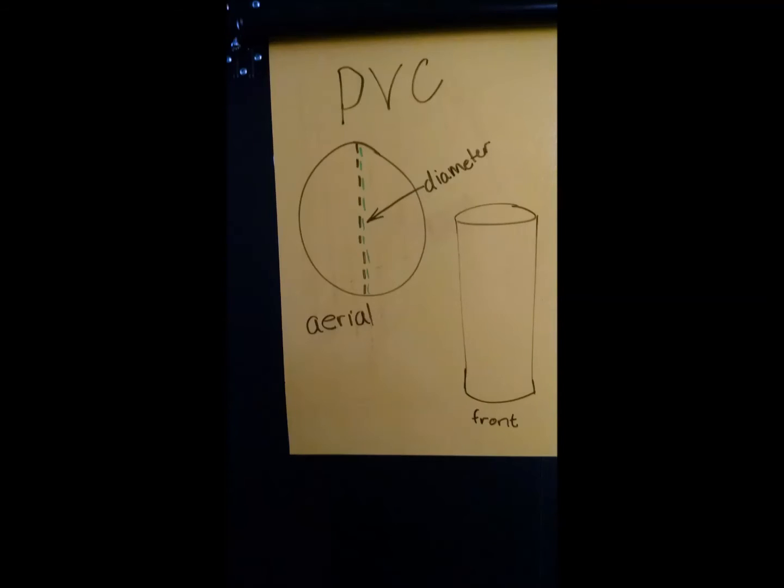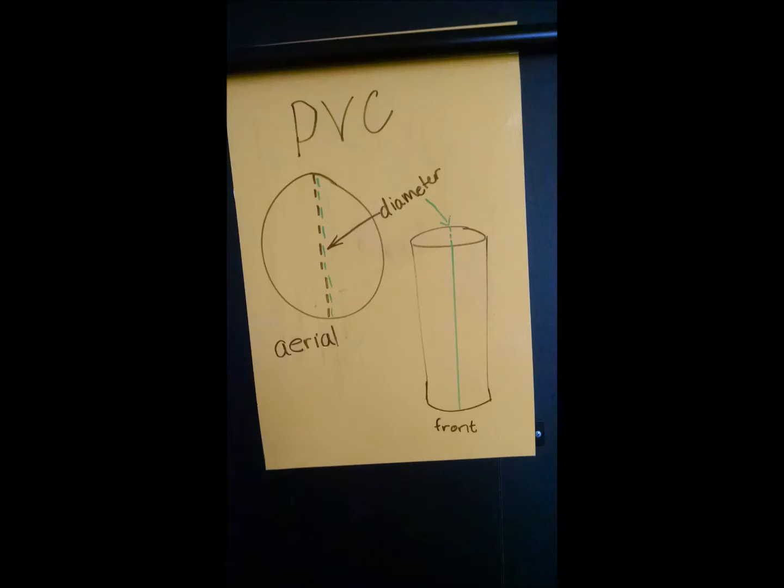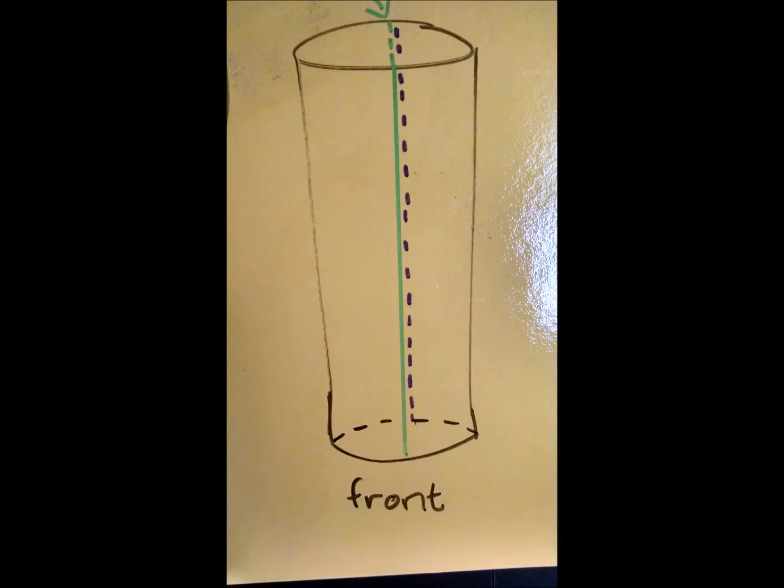So this is an aerial and a front view of the PVC pipe, and I have just drawn a diameter and copied it onto the front view. So what I did then is I traced the diameter down the front of the PVC pipe, and I did the same, I traced it down the back as well. It's very important that you get this very straight and accurate.